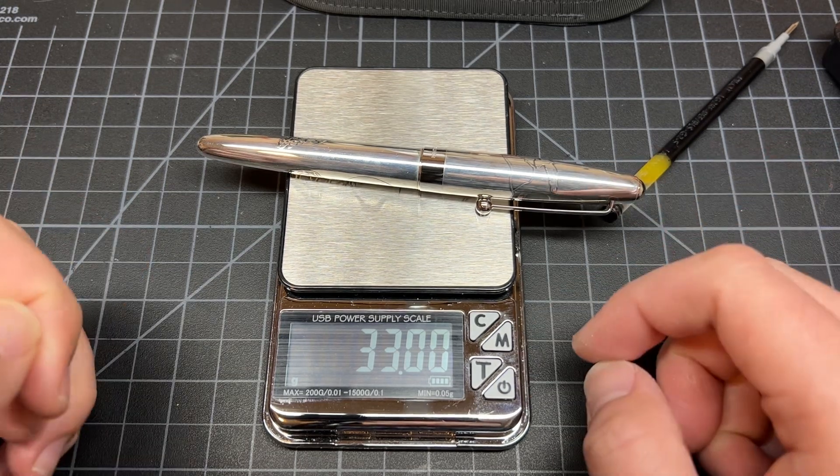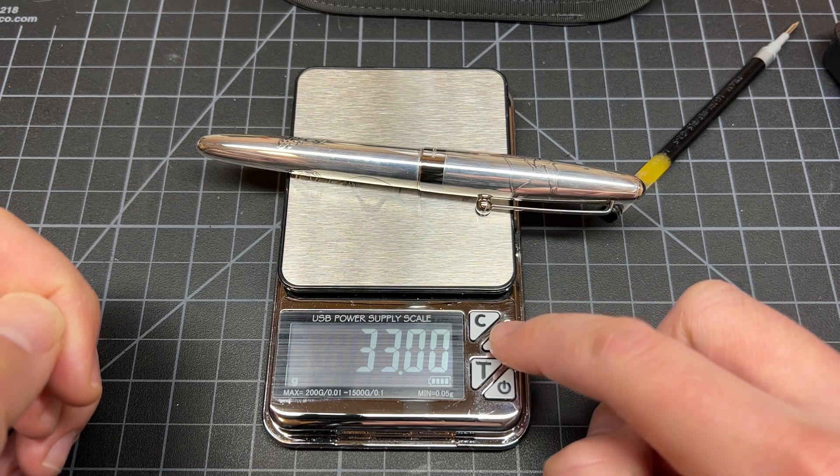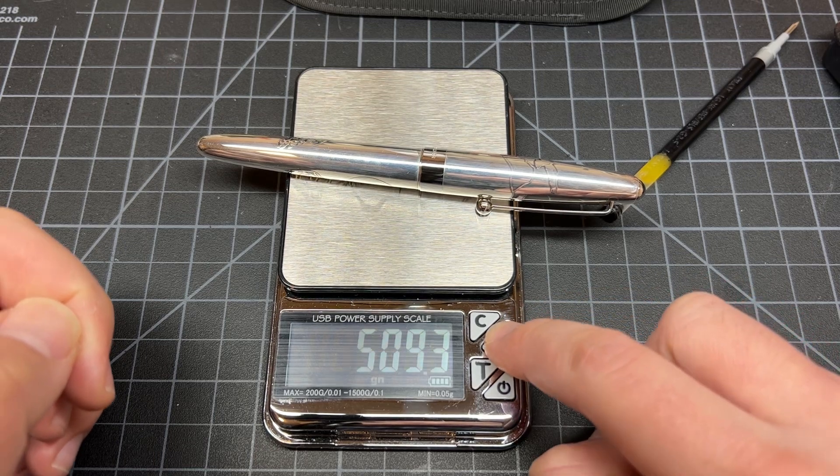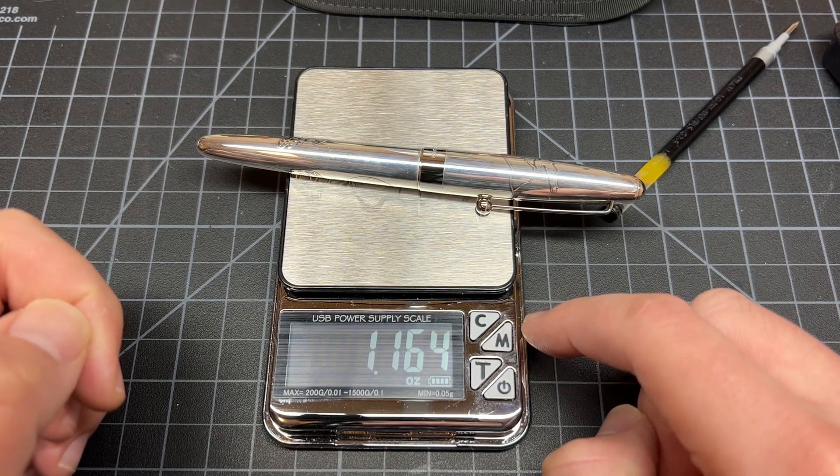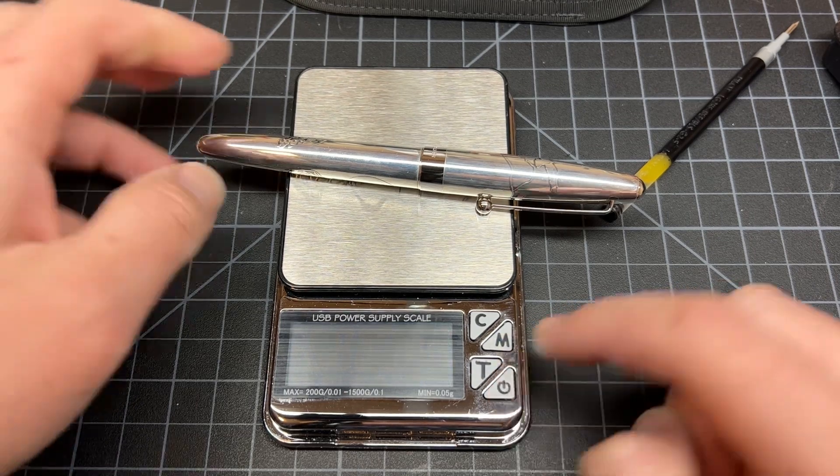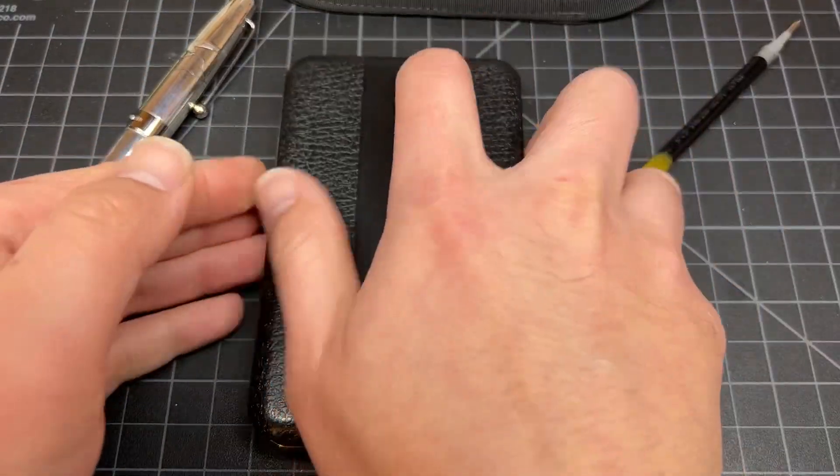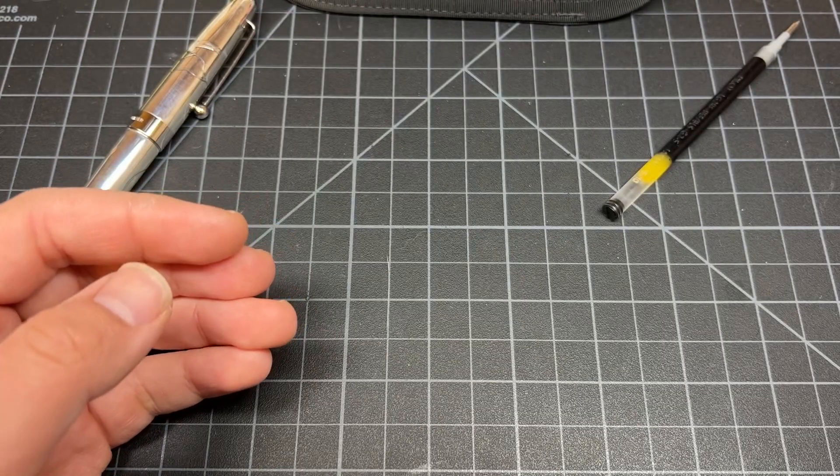If we want to convert that to ounces, we're going to switch over to ounces. This is 1.164, and that's all.